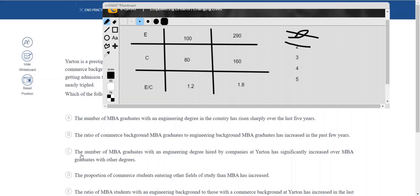Let's go to option number C. The number of MBA graduates with an engineering degree hired by companies at Yarton has significantly increased over MBA graduates with other degrees. Irrelevant because we do not know anything about who hired who. Hiring is not part of the passage. It's out of scope. Easy to eliminate.